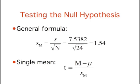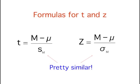To test the null hypothesis, we do a t-test. To compute t, we take a statistic, subtract the hypothesized value, and divide that by the estimated standard error of the statistic. Because we're testing a single mean, we take the sample mean minus the hypothesized value of the population mean, and divide it by the estimated standard error of the mean. You might notice how similar this formula for t is to the formula for z that we saw earlier.